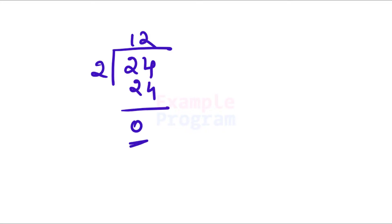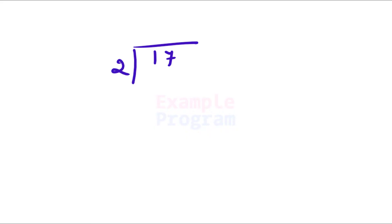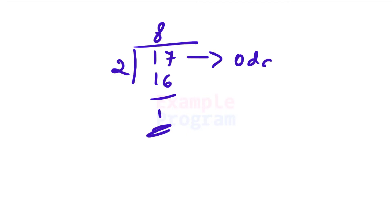For example, if we have the number 24, all you have to do is divide 24 by 2. You can see the remainder is 0, and since the remainder is 0, 24 is an even number. Similarly, if you have 17, divide 17 by 2 and you get the remainder as 1, so 17 is an odd number.